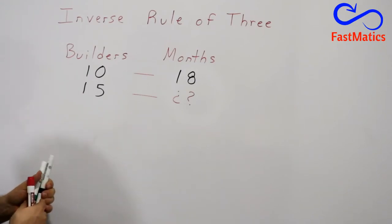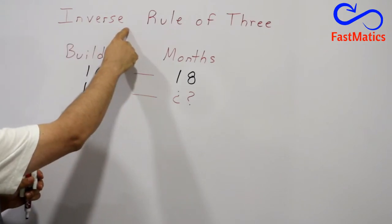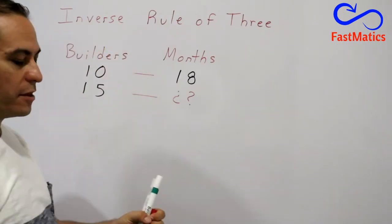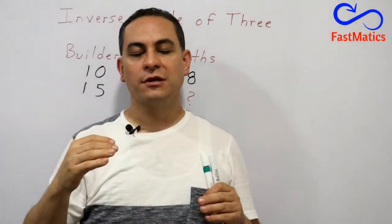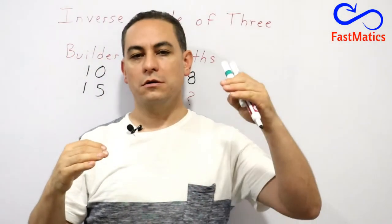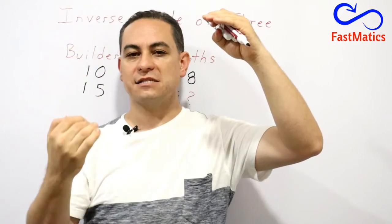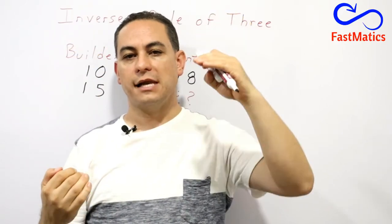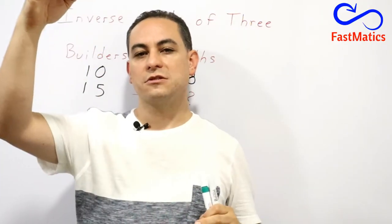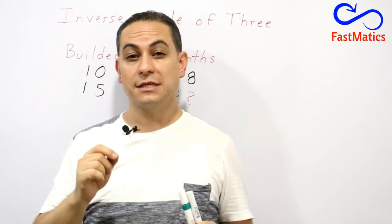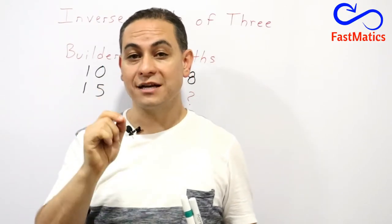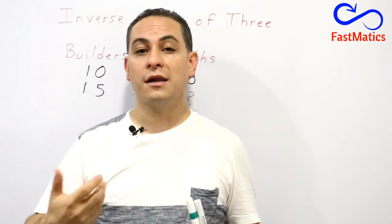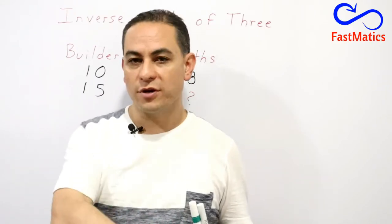Here it is very important to say that this kind of problem is inverse. Because think, if you have more builders, less months. Less builders, more months to finish. That is a very important characteristic when you analyze inverse rule of 3 problems.